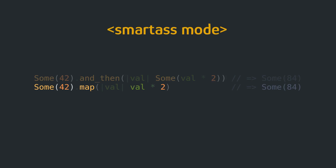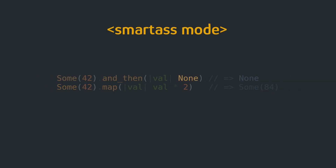Map represents an operation that can never fail. That's why the closure doesn't return an option, but a value which will then automatically be wrapped in a Some variant. AND_THEN, on the other hand, takes a closure that returns an option, which can also be None.